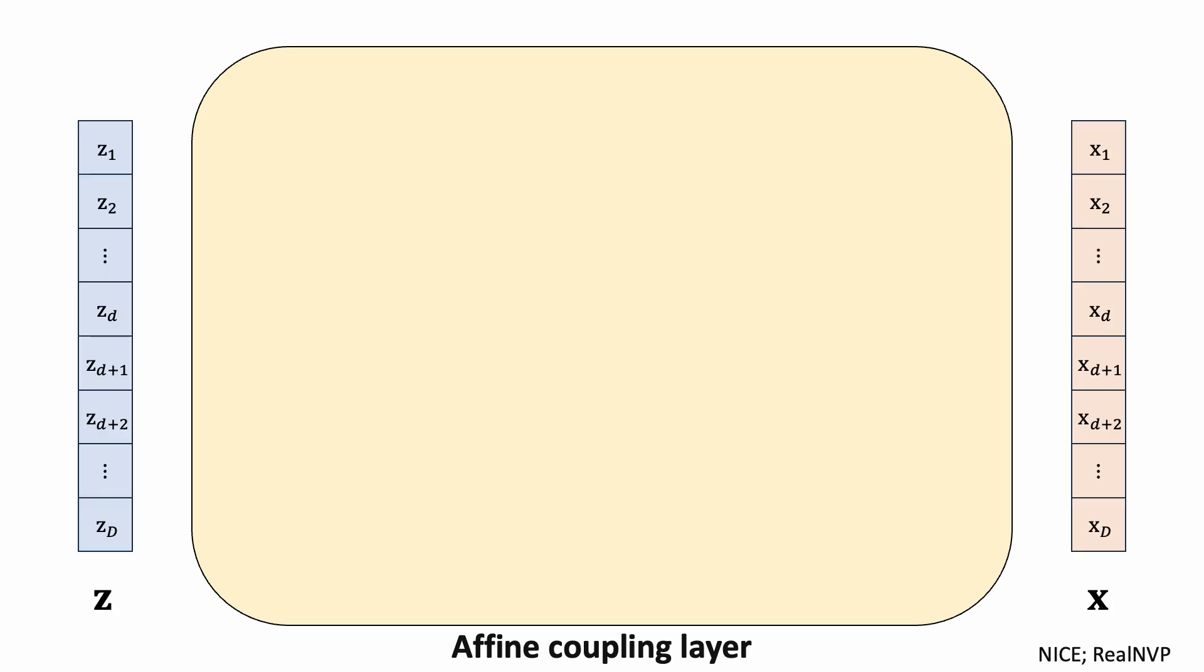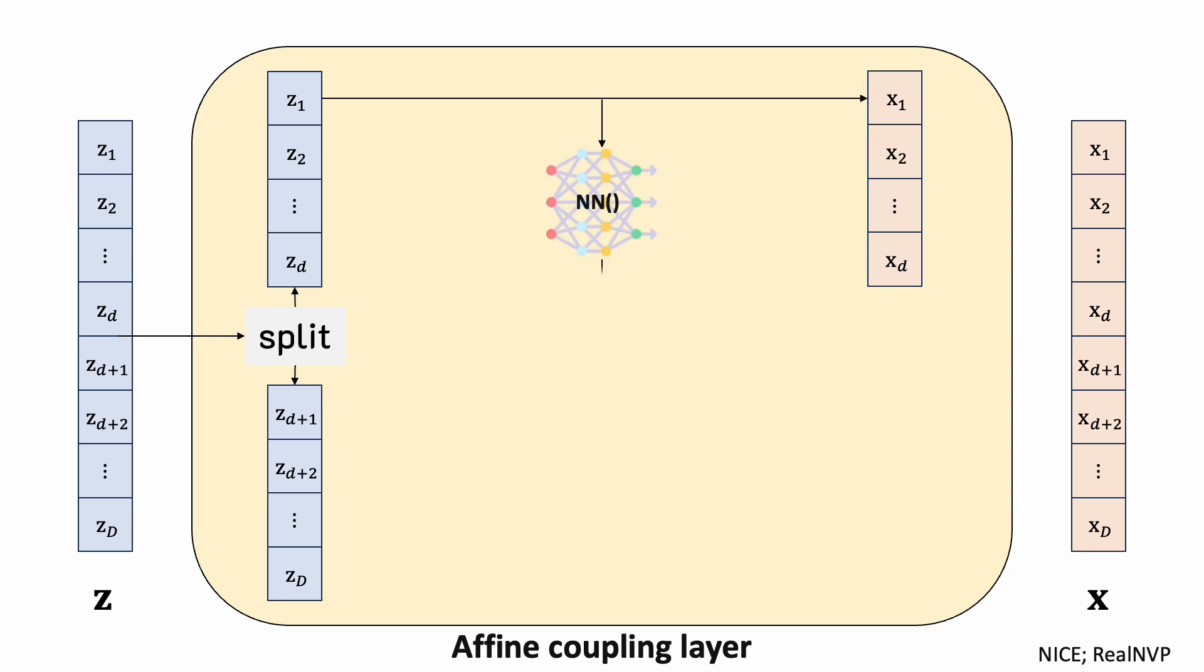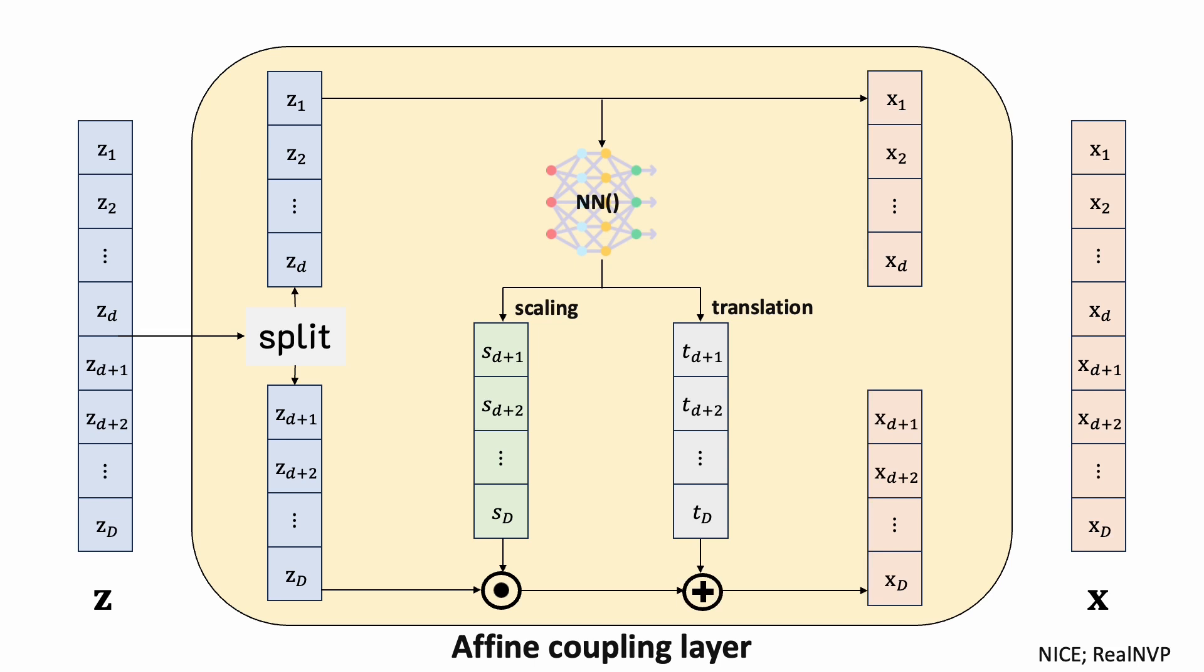One popular design is called the coupling layer. The first step is to split the input into two disjoint sets. We do nothing for the first half. We train the neural network to predict the scale and translation vector and compute the second half by element-wise multiplication and addition. These two vectors are then concatenated as the output of the coupling layer.